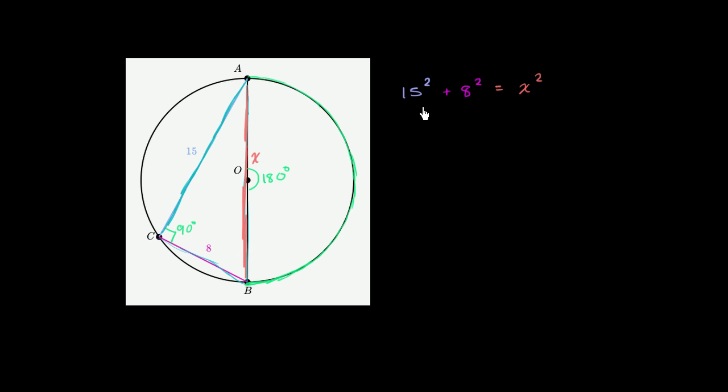So 15 squared, that's 225. Eight squared is 64. Plus 64 is equal to X squared. I want to do that in green. Is equal to X squared. 225 plus 64 is 289 is equal to X squared.